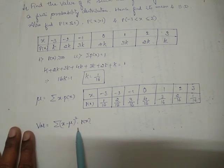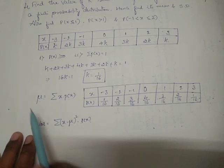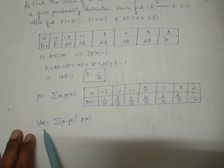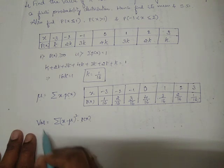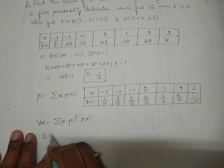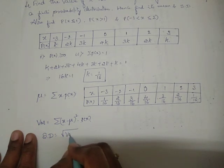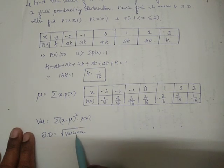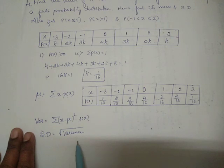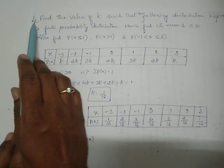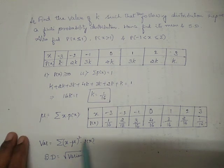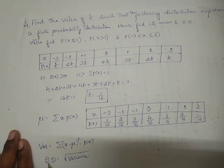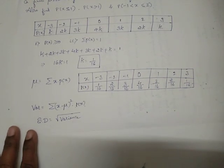I have already shown three problems demonstrating how to find the mean and variance, so I am giving this problem for you to try. After finding the variance, the standard deviation is the square root of the variance. Comment your answers in the comment section — write: 'fourth problem, mean answer, variance answer, standard deviation answer.'